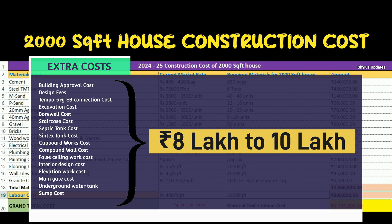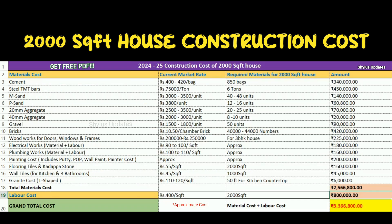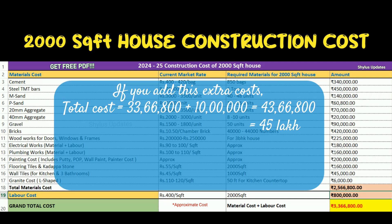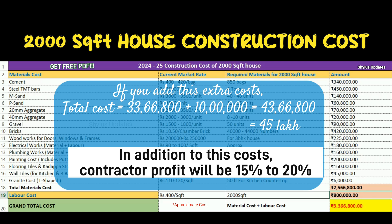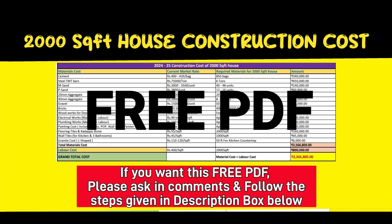Full details for these extra mandatory works will be uploaded in coming videos. Adding the extra mandatory work cost, the total cost for a 2,000 square feet house will be ₹33,66,800 plus ₹10,00,000, giving ₹43,66,800, which we can take as approximately ₹45,00,000. In addition, contractor profit will be 15% to 20%. If you want this free PDF, please ask in the comments and follow the steps given in the description box.